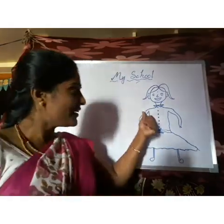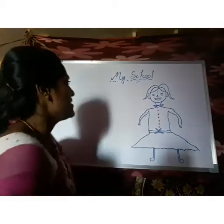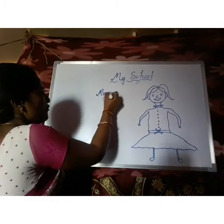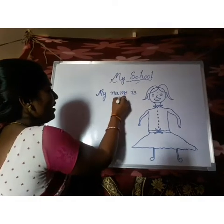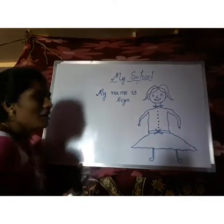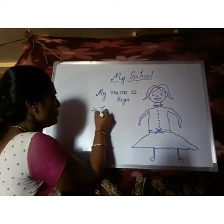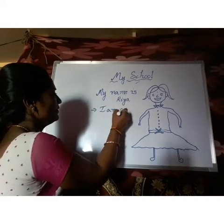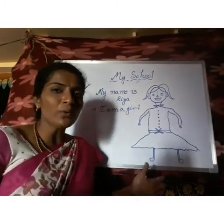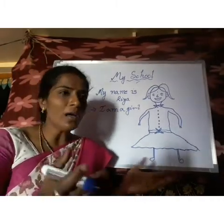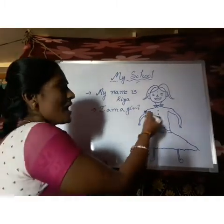She is Riya. She is telling: Hello, my name is Riya — R-I-Y-A. She is a girl. From the 'About Me' lesson, you know how to introduce yourself to others. She is telling: my name is Riya and I am a girl.